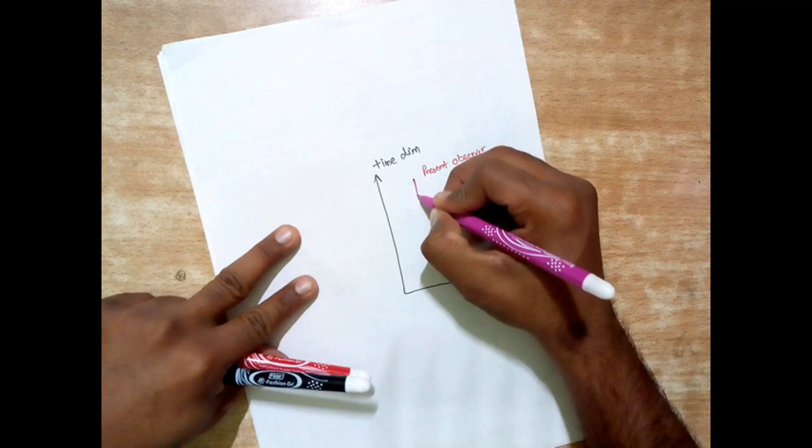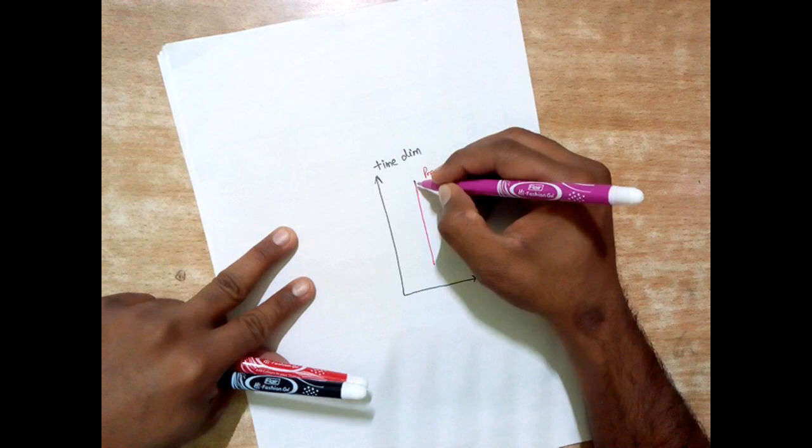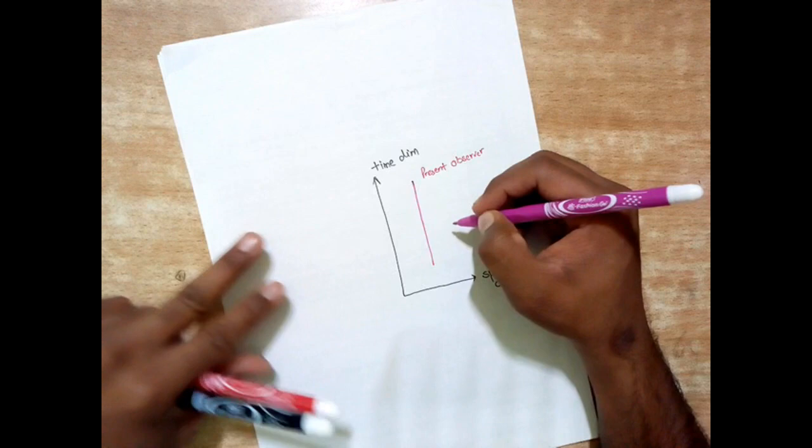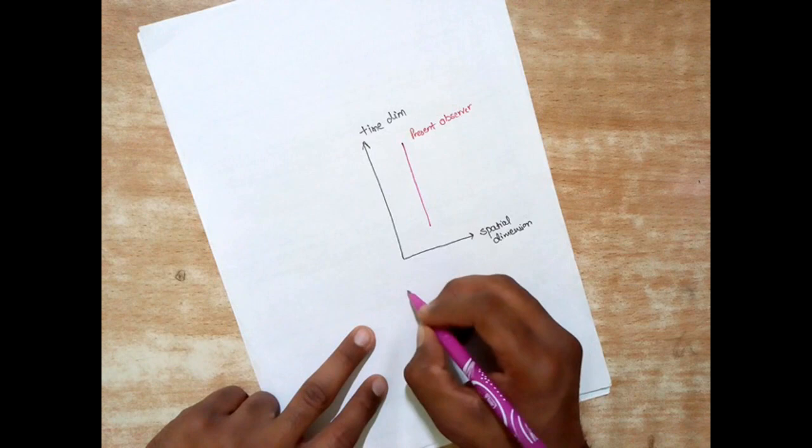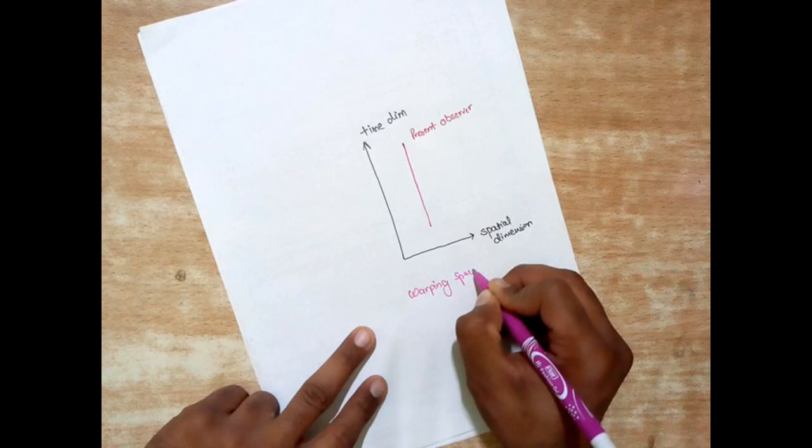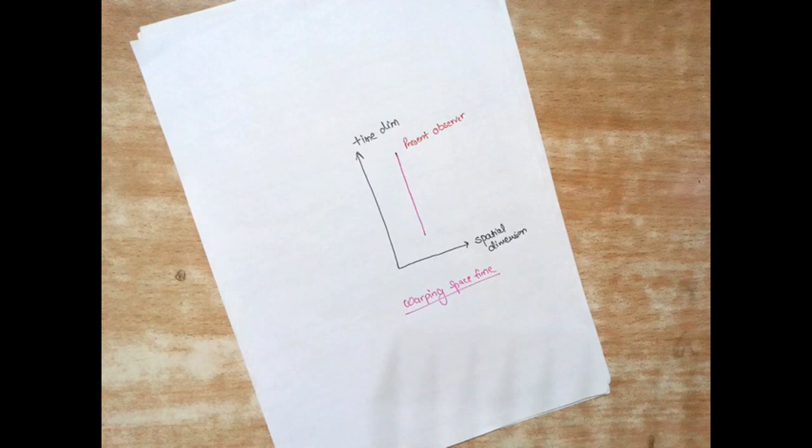So the observer of the present time is watching it from here. He then pulls the light through backwards and it goes like this. So what he is doing is to take back or reverse the timeline and see what is going to happen with the objects or the light wave. That's where the concept of warping space-time jumps in.